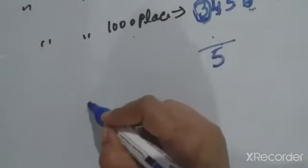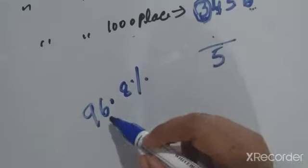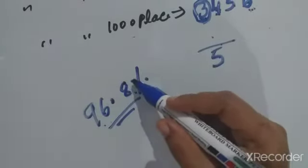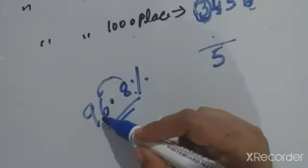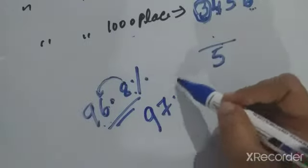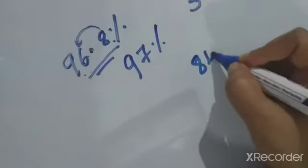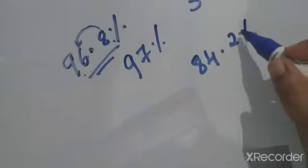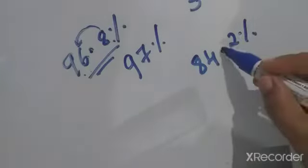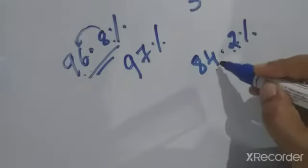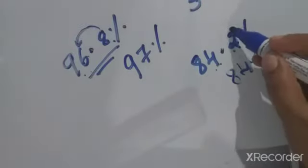Now for decimals: if 96.8 is your 10th mark percentage, how to round off this number? After the decimal point, 8 is greater than 5, so we add 1 to the whole number. The approximate value of 96.8 is 97 percent. One more example: a student's 10th mark percentage is 84.2 percent. After the decimal point, 2 is less than 5, so the percentage stays as 84 percent itself.